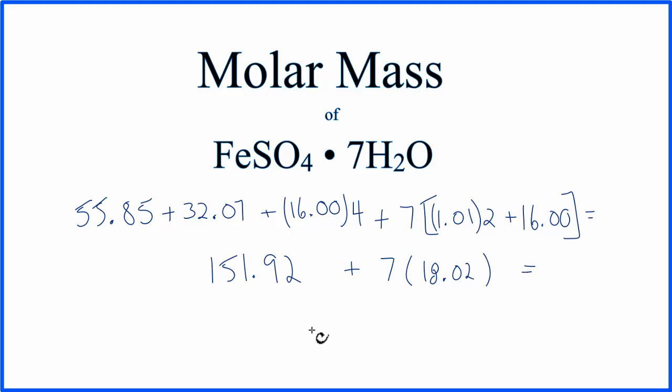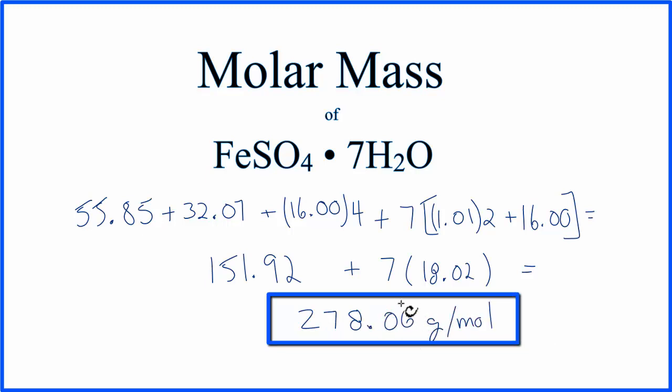Do that, and our final molar mass is 278.06, and we need to write our grams per mole here. Your value may be a little bit different after the decimal point. My periodic table rounds to two decimal places, so there may be a little bit of difference.